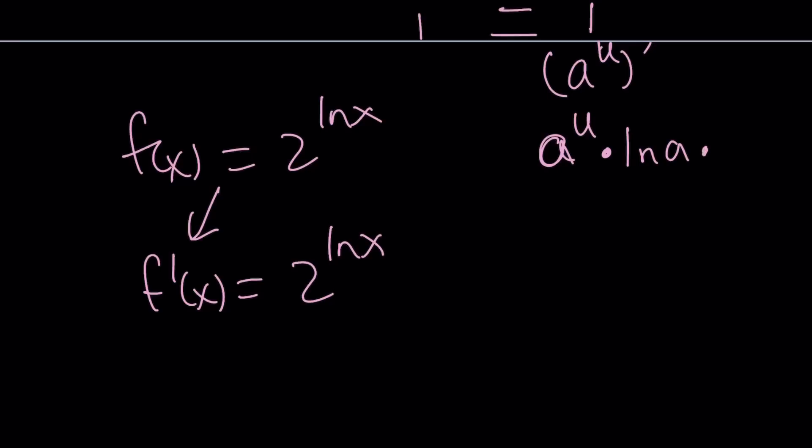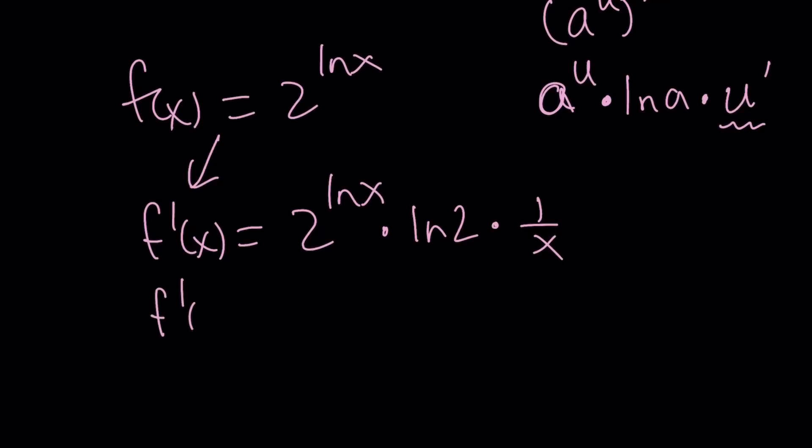And then multiply by u prime. This is called the derivative of the inside or the chain rule. So by that rule, we have ln 2 multiplied by ln x. The derivative of ln x is 1 over x. So we can basically write f prime as 2 to the power ln x times ln 2 divided by x.